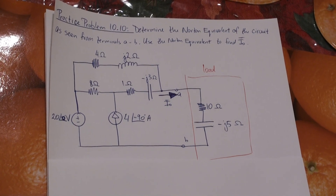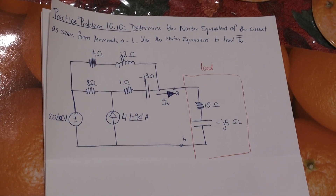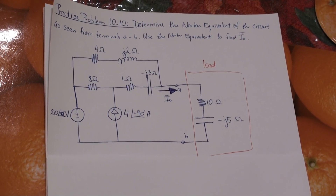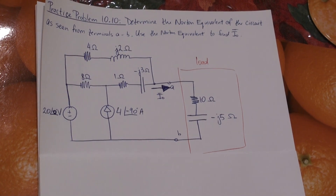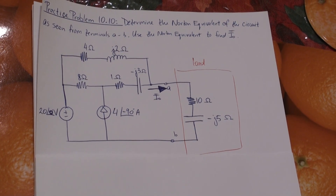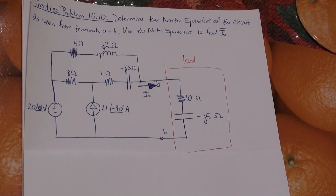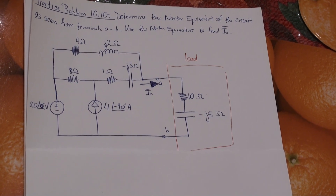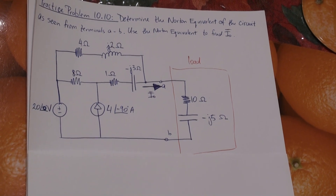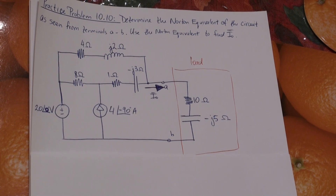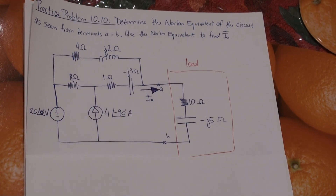This is the solution to practice problem 10.10 from the textbook Fundamentals of Electric Circuits by Alexander and Sadiku. The problem asks us to determine the Norton equivalent of the circuit as seen from terminals A and B.